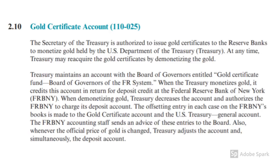Whenever the official price of gold is changed, Treasury adjusts the account and simultaneously the deposit account. For those who aren't aware, in 1934 with the passage of the Gold Bullion Reserve Act, the government took control of all of the gold held by the Federal Reserve and then issued to the Federal Reserve gold certificates that act as a lien on Treasury gold. The Federal Reserve cannot exercise this lien for gold on their own accord. However, the Treasury has the right to create and retire these gold certificates. If it were to retire the gold certificates, it would do so by buying back the gold at the price set on the books — in other words, the statutory price.